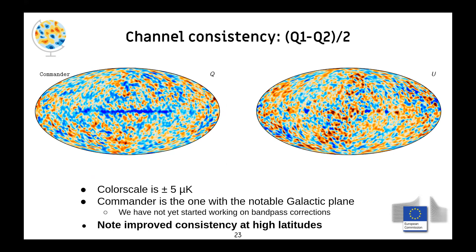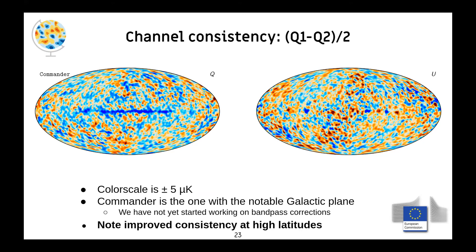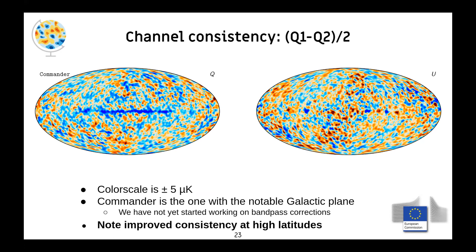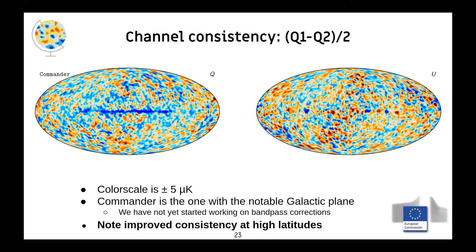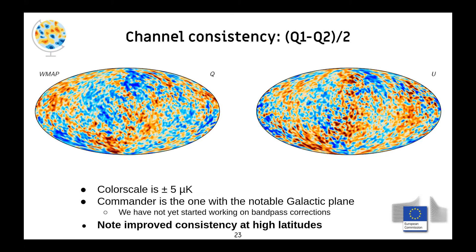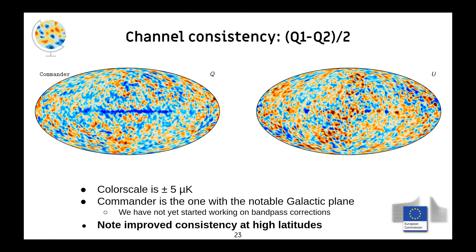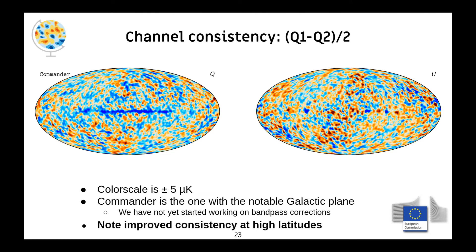You might wonder why we're talking about Q-band specifically. There are two differencing assemblies, Q1 and Q2, which have very similar but not identical passbands. You can check the consistency between the WMAP and Commander processing. In the Commander processing, we see a little difference along the galactic plane, which you'd expect since the two slightly different bandpasses mean the galactic plane SED changes quickly. One really nice result is excellent consistency in the Commander solution at high latitudes, arguably better than in the original WMAP processed data. This is our best evidence so far that we are doing comparable, if not better, than the original WMAP analysis.